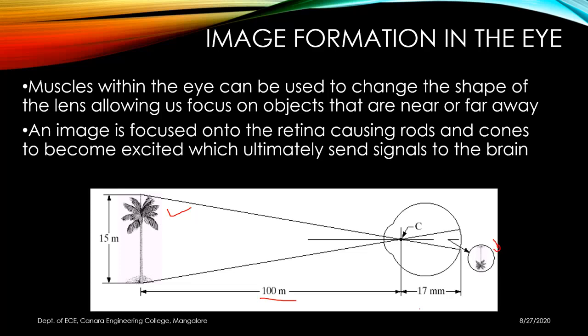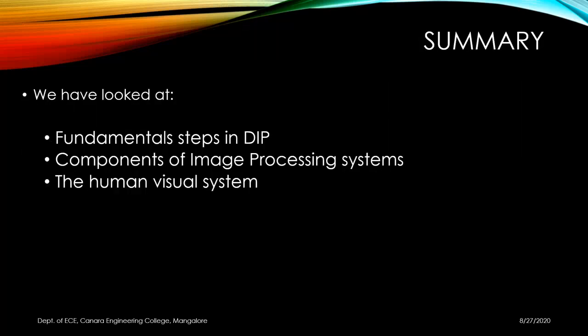In this lecture we looked at fundamental steps in digital image processing, components of an image processing system, and the human visual system — specifically the structure of the human eye. In the next lecture we will learn about brightness adaptation and discrimination, and how images are acquired onto an image processing system.